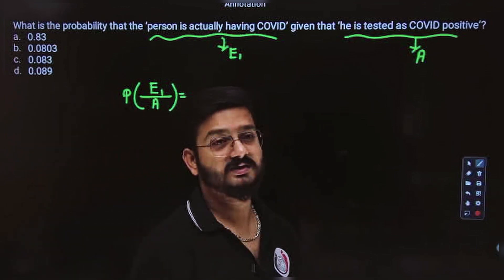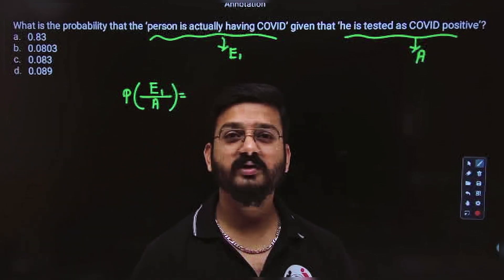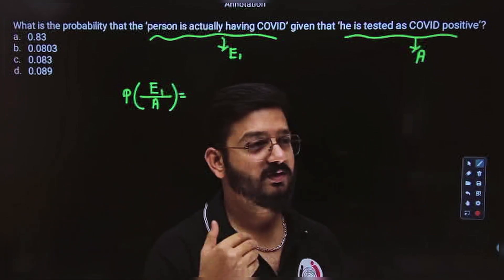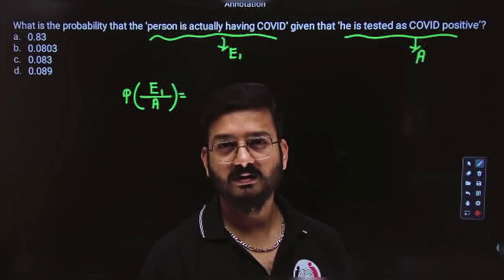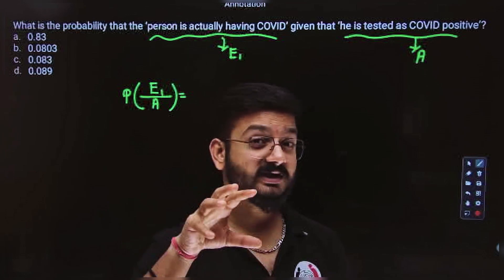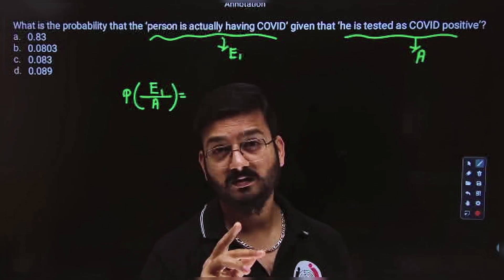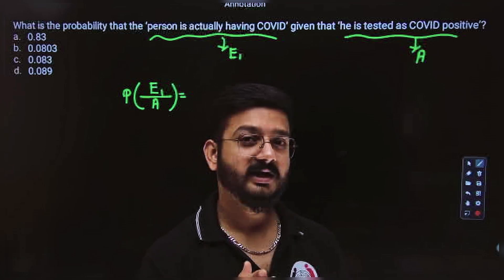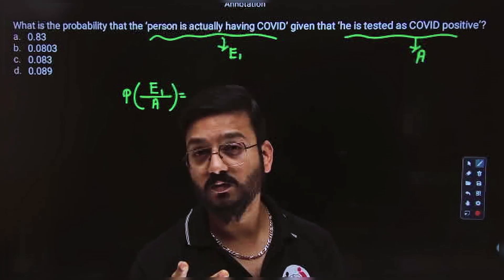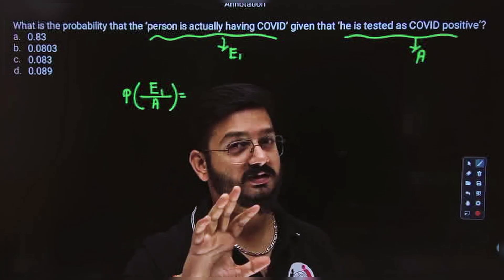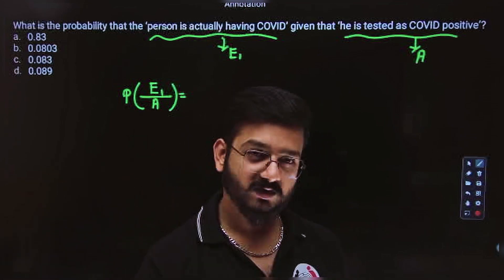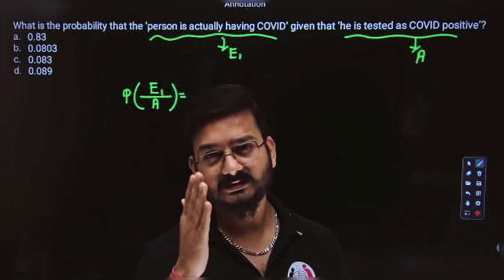Reverse means the subject is reversed. For example, suppose I want to find the probability of picking a red ball from a factory — the subject is picking the red ball. Now if I reverse it: I have selected a red ball, what is the probability it was picked from factory 2? Now the subject is factory 2, not the red ball. When your subject is reversed, we use Bayes theorem.